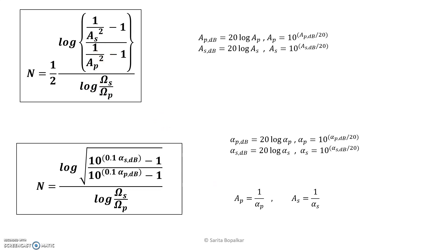To summarize the key points: attenuation in normal value is the inverse of gain. Attenuation is usually expressed in dB. The gain at edge frequency is always less than 1 and attenuation in linear form is greater than 1 due to this inverse relation. The dB attenuation and dB gain are numerically the same, but dB gain is negative and dB attenuation is positive. You can use any formula to find the order of the filter according to the given specifications, or use conversion techniques to stick to one formula. Thank you.